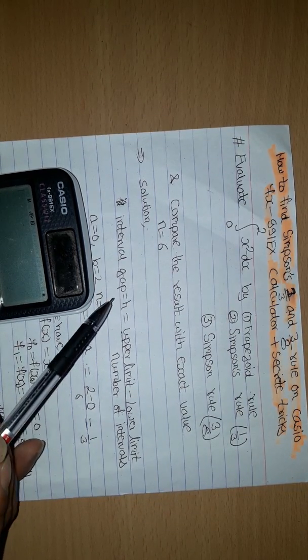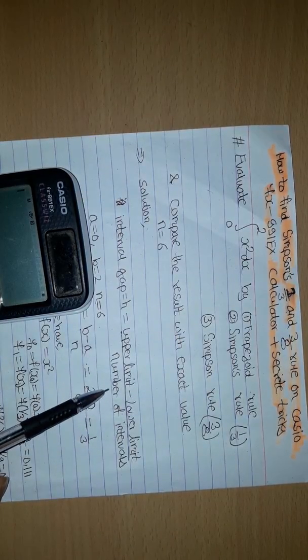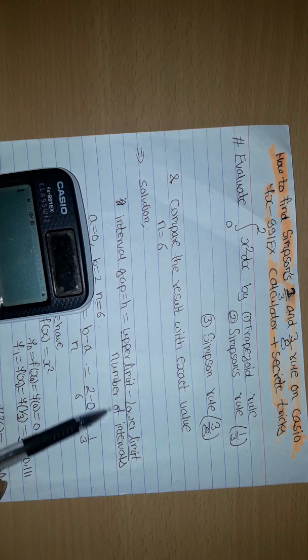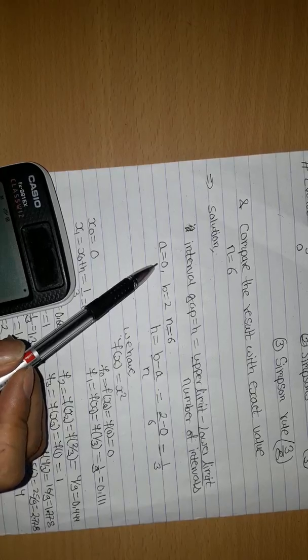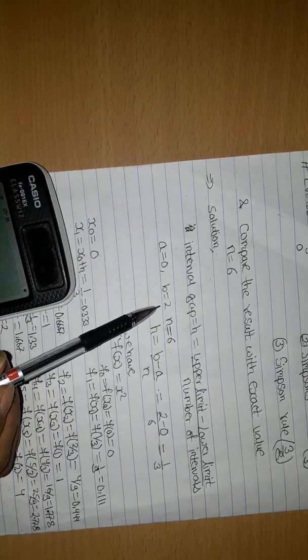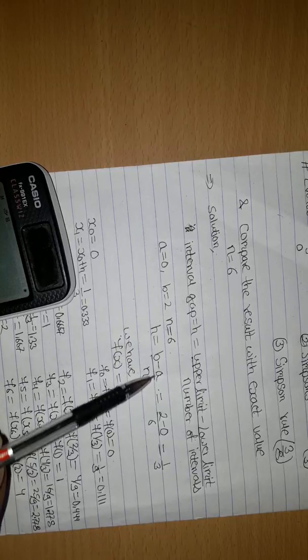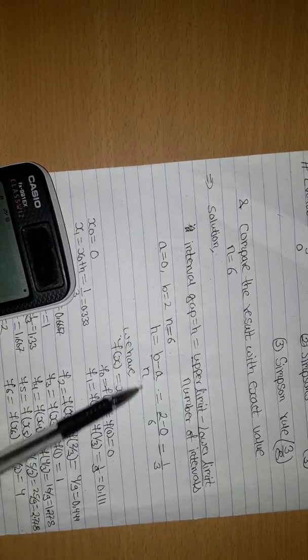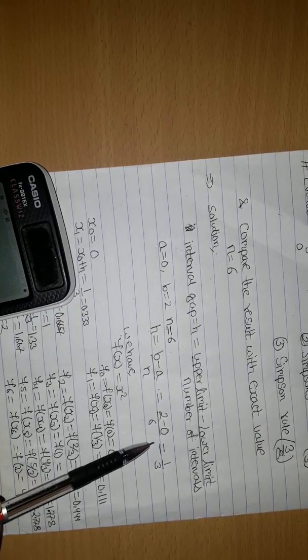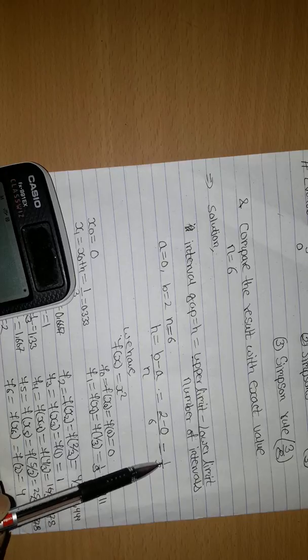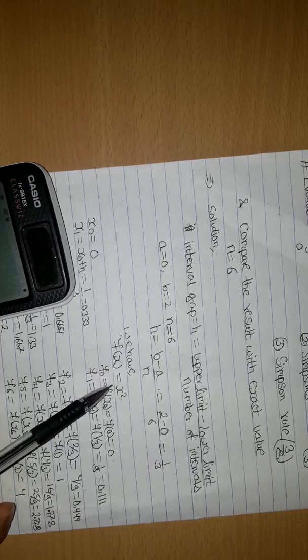Interval gap H is equal to upper limit minus lower limit divided by number of intervals. A is equal to 0, B is equal to 2, N is equal to 6. H is equal to B minus A divided by N is equal to 2 minus 0 divided by 6 is equal to 1 divided by 3. We have F(X) is equal to X squared.